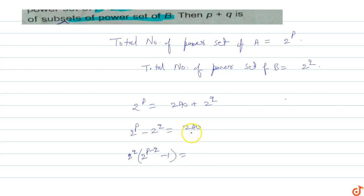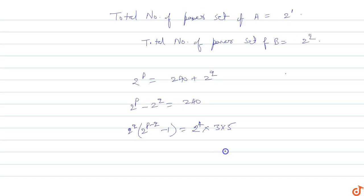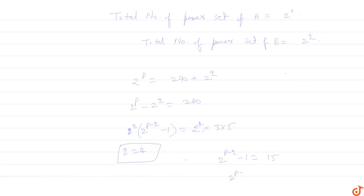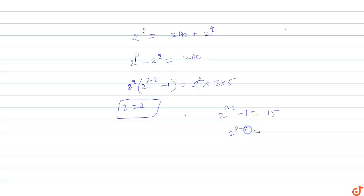Now 240 equals 2^4 times 3 times 5. Comparing the factors, 2^Q equals 2^4, so Q equals 4. Then 2^(P-Q) minus 1 equals 15, so 2^(P-Q) equals 16, which equals 2^4.